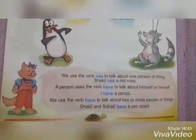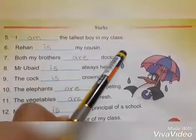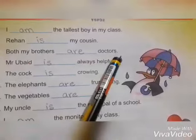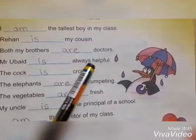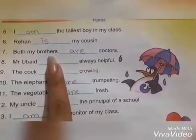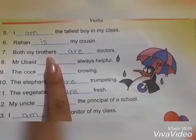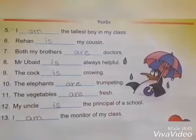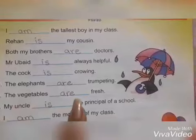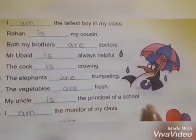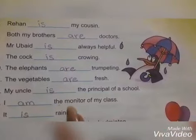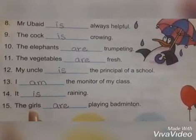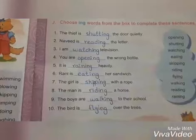Moving to page number 20: 'I am the tallest boy in my class.' 'Rehan is my cousin.' 'Both my brothers are doctors.' 'Mr. Van is always helpful.' 'The book ___ — yes, we use 'is' as it is a singular noun.' 'The elephants are trumpeting.' 'The vegetables are fresh.' 'My uncle is the principal of a school.' 'I am the monitor of my class.' 'It is raining.'